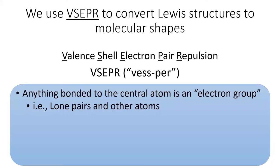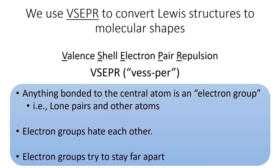We consider anything bonded to the central atom to be an electron group. In practice, these are either lone pairs or other atoms. Electrons being negatively charged repel each other, so the electron groups spread out as much as possible around the central atom.